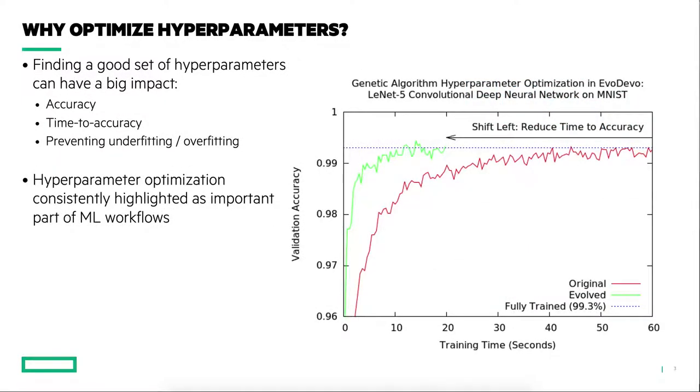So why do we care so much about hyperparameters? Well, it turns out that finding a good set of hyperparameters for your deep learning model can have a very big impact on everything from your final accuracy to the time to converge. And it can also help with preventing two significant problems with machine learning models, which is overfitting and underfitting. Because of this, hyperparameter optimization has consistently been highlighted by machine learning engineers and data scientists as a key part of their machine learning workload.